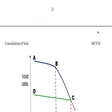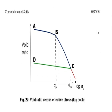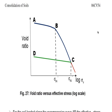Now, looking at this curve — void ratio versus log of effective stress — the pre-consolidation pressure means the pressure the soil was subjected to in the past. The pressure just before point B is called the Pre-Consolidation Pressure. From B to C is the normal consolidation line, representing the primary consolidation part.